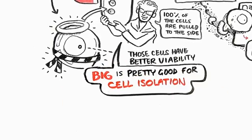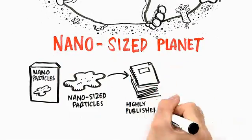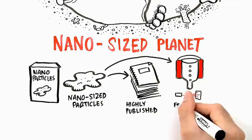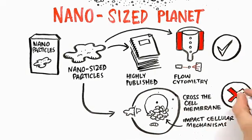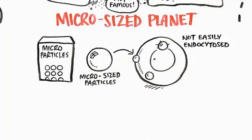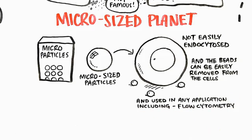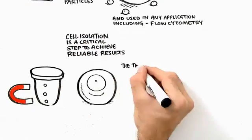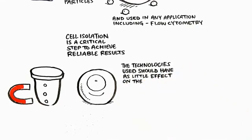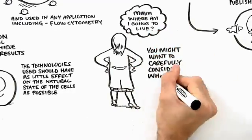So, here is where cell isolation is. Two planets, one nano-sized and one micro-sized. Both have their advantages and disadvantages. Nano-sized particles have been highly published, and historically, this was the only technology that worked well with flow cytometry. But nanoparticles cross the membrane and have been demonstrated to impact cellular mechanisms. Micro-sized particles are not easily endocytosed, and the beads can be removed from the cells, and then their cells can be used in any application, including flow cytometry. Immunologists have recognized that cell isolation is a critical step to achieve reliable results. The technology used should have as little effect on the natural physiological state of the cells as possible. Knowing this, you might want to carefully consider which planet you want to live on.